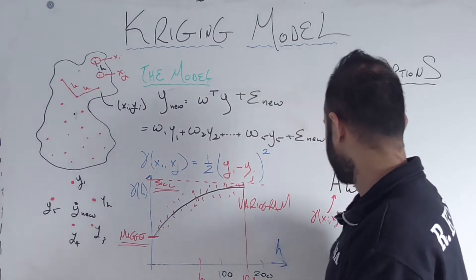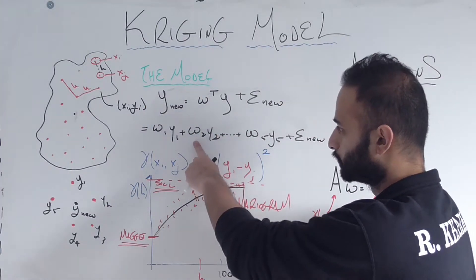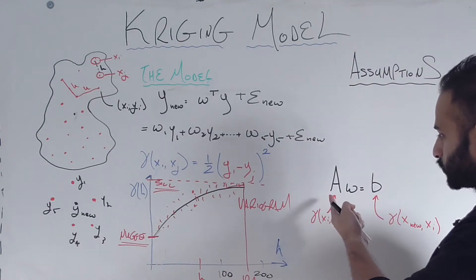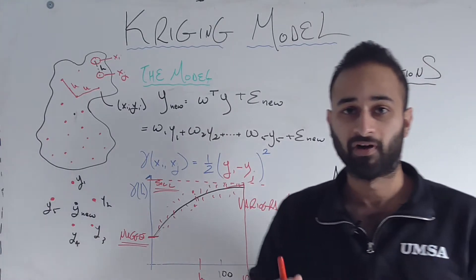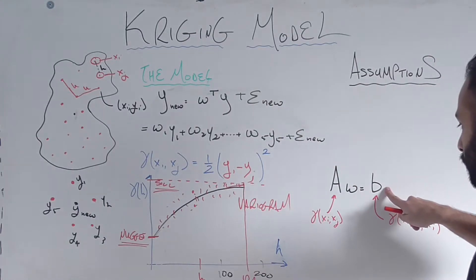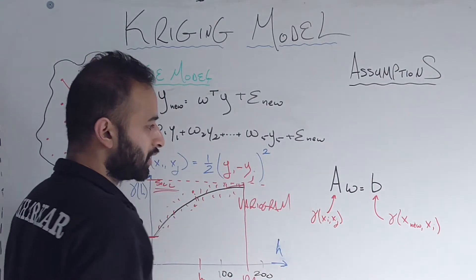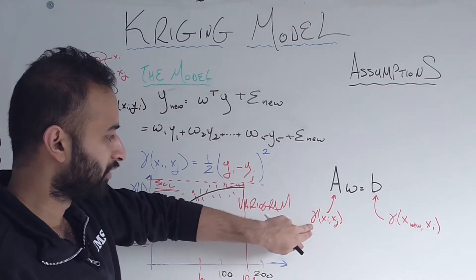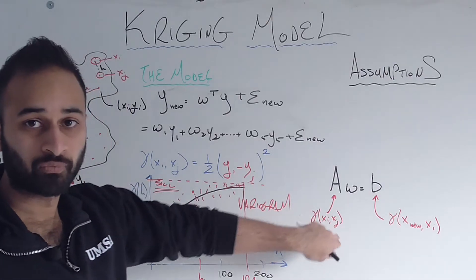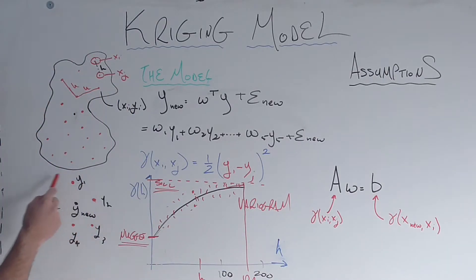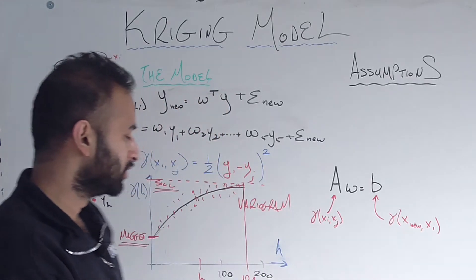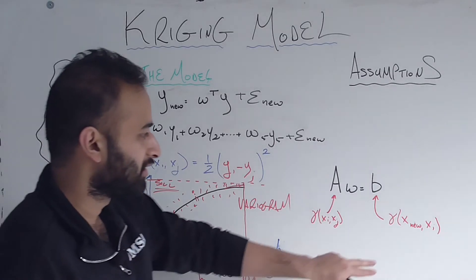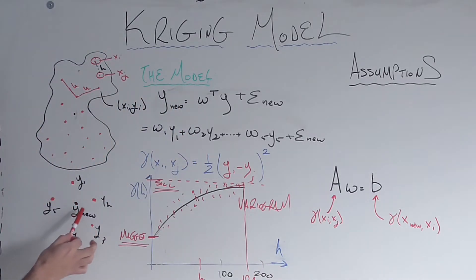But what it boils down to is that solving the Kriging model, solving for these weights w, ends up basically just solving a matrix equation, solving something where we have a matrix a times our weights w, so w is just a vector of w1 through w5, is equal to some other vector, vector b. Now a is comprised of variogram functions between xi and xj, where xi through xj are my five points that are my neighbors of the unknown point. Now b is also comprised of variogram functions, but it's between xi's, which are my five points I care about, and the x nu, which is the nu point that I would like data for.